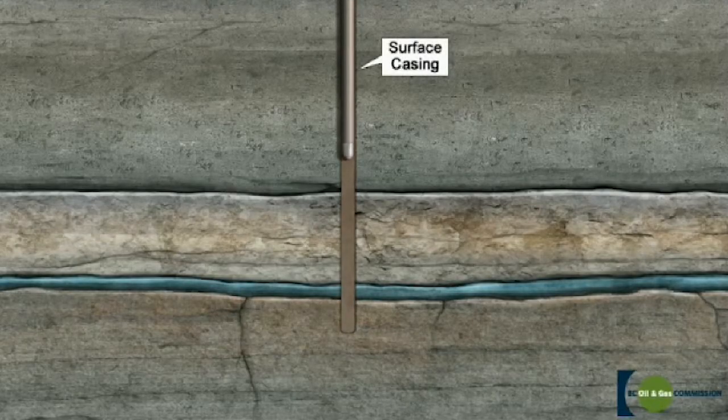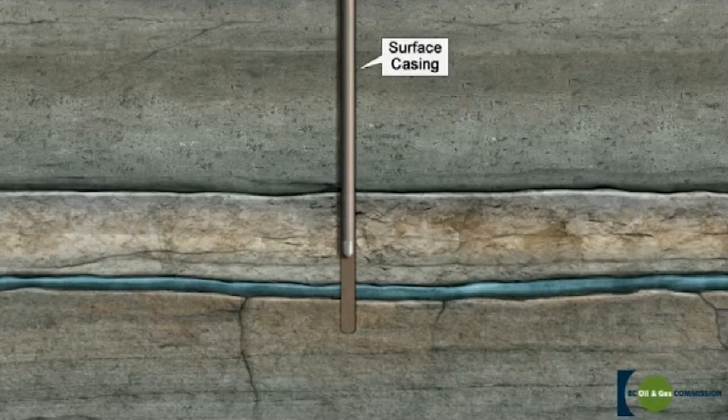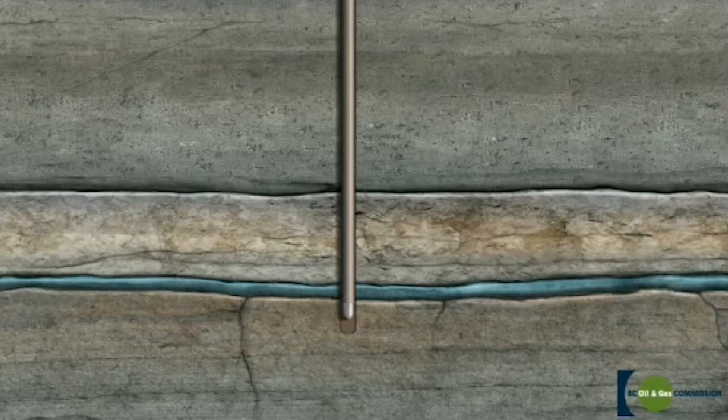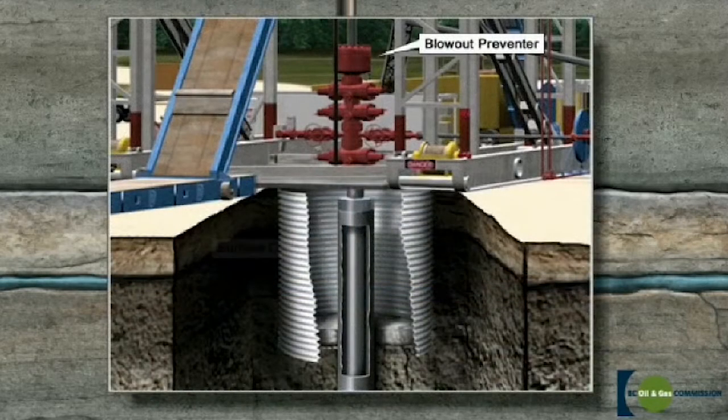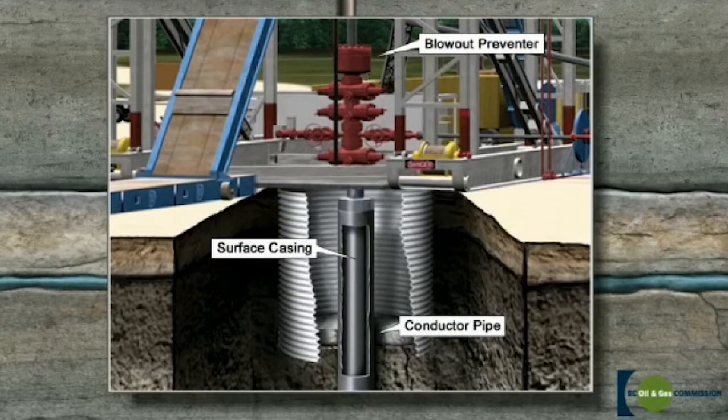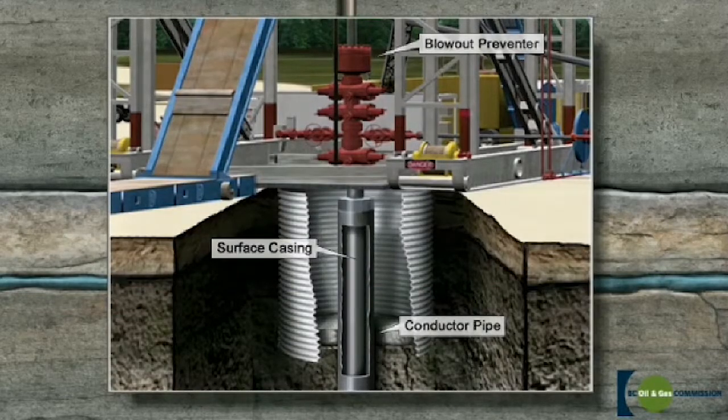Surface casing is inserted into the drilled hole to isolate the fresh water zone and also serves as a foundation for the blowout preventer, a safety device that connects the rig to the wellbore.